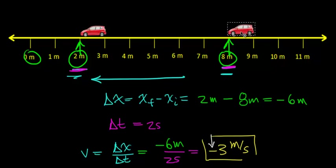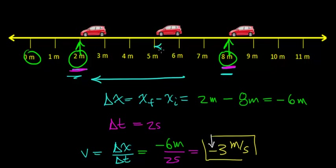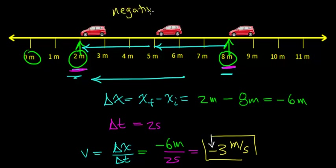After 1 second, this car travels from 8 meters to 5 meters — a displacement of negative 3 meters. After one more second it travels an additional negative 3 meters. This is what it means for an object to have negative velocity: it travels in the negative x direction.